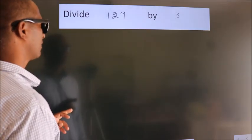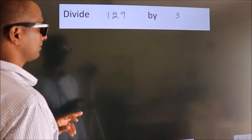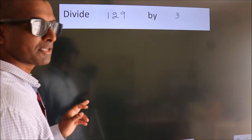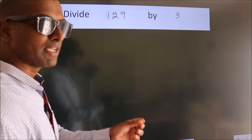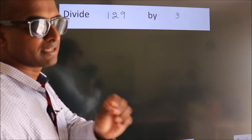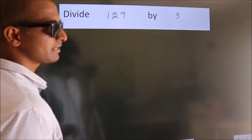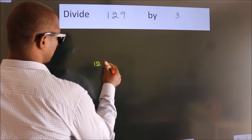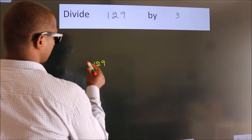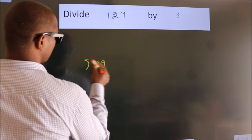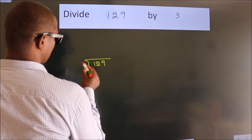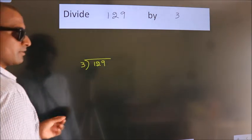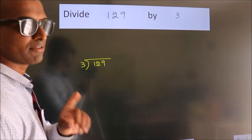Divide 129 by 3. To do this division, we should frame it in this way: 129 here, 3 here. This is your step 1.